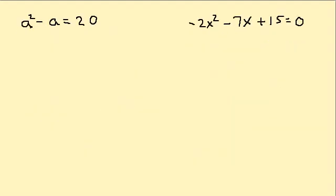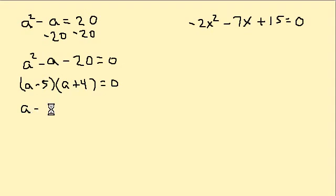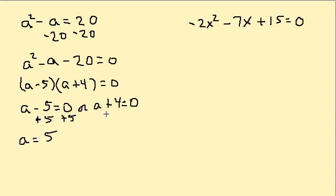Remember, we want everything on one side of the equal sign set equal to 0. So we subtract 20 from both sides to get a squared minus a minus 20 equals 0. Factoring gives a minus 5 times a plus 4. Setting each factor equal to 0: a minus 5 equals 0 gives a equals 5, and a plus 4 equals 0 gives a equals negative 4. So the solution set is negative 4, 5.